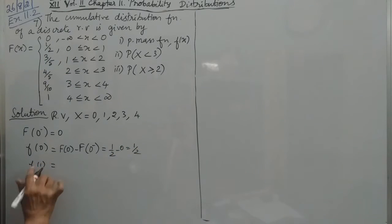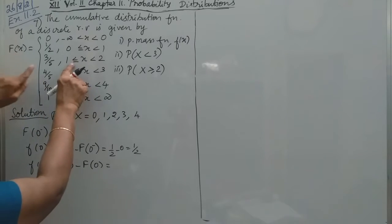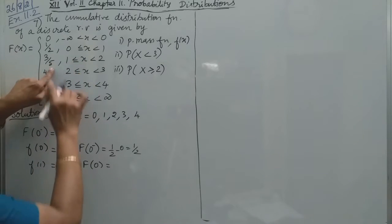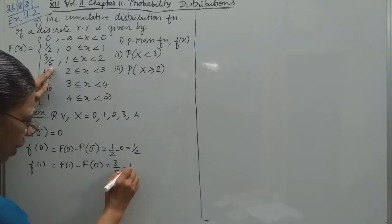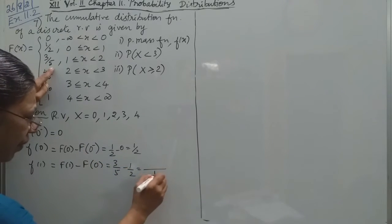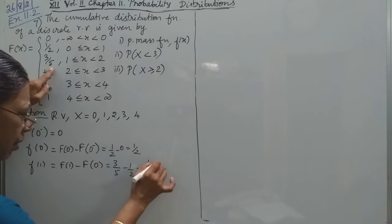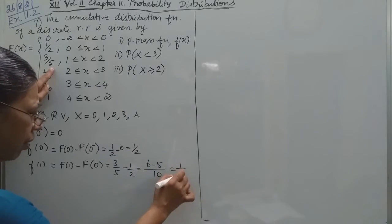So f(1), capital F(1) minus capital F(1 minus 1) which is 0. So capital F(1), 1 is 1/2. Now 3/5 minus 1/2. The LCM is 10, so 6 minus 5, that is equal to 1/10.